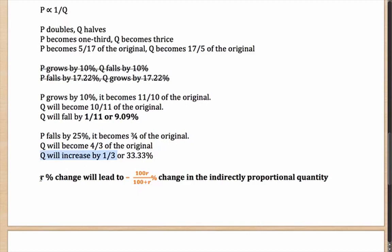Which essentially leads to the idea that an R% change will lead to minus 100R/(100 plus R) percentage change in indirectly or inversely proportional quantities. Please note, this formula is very, very important. It will come in handy in various places. R percentage change leads to minus 100R upon 100 plus R percentage change.